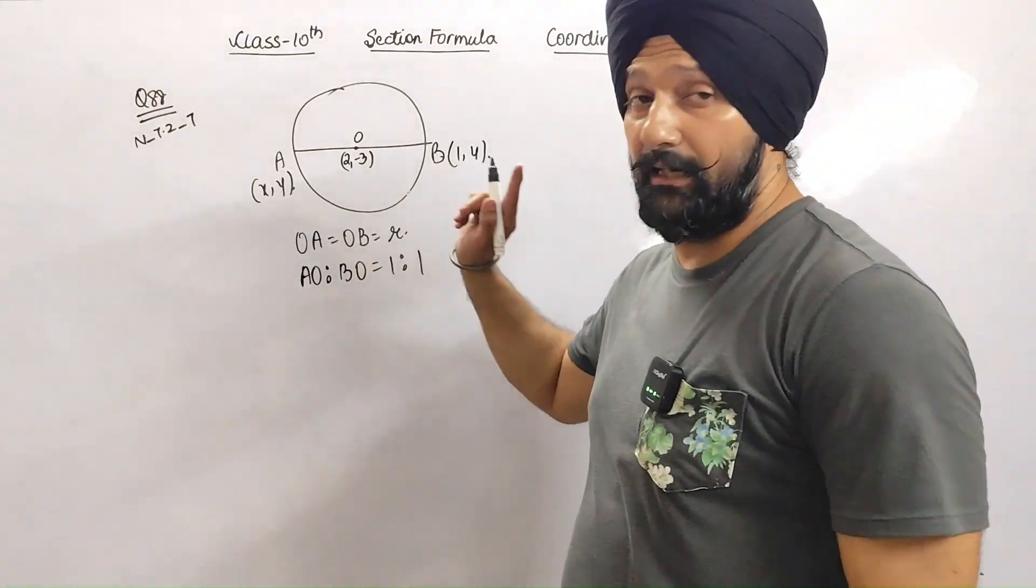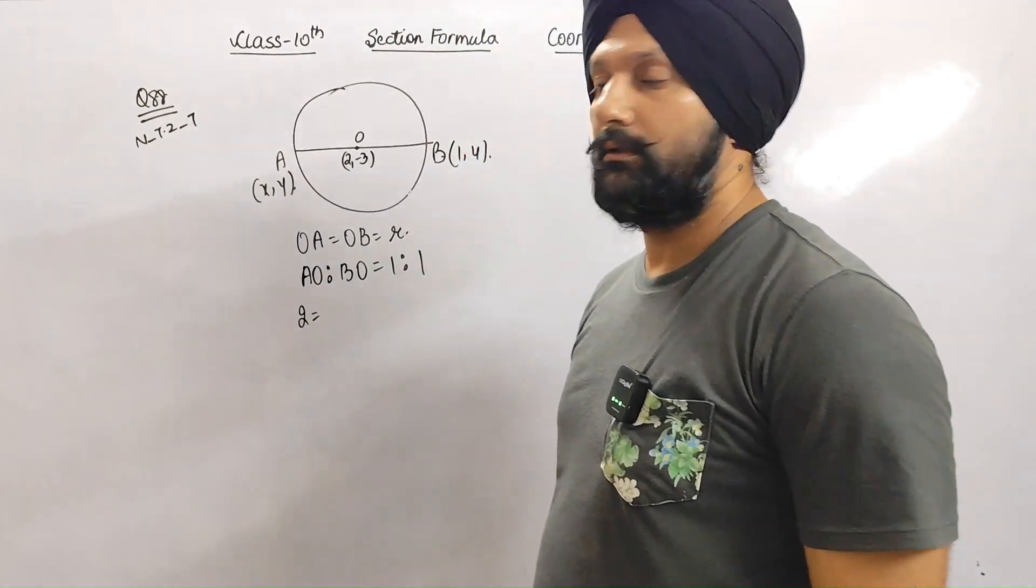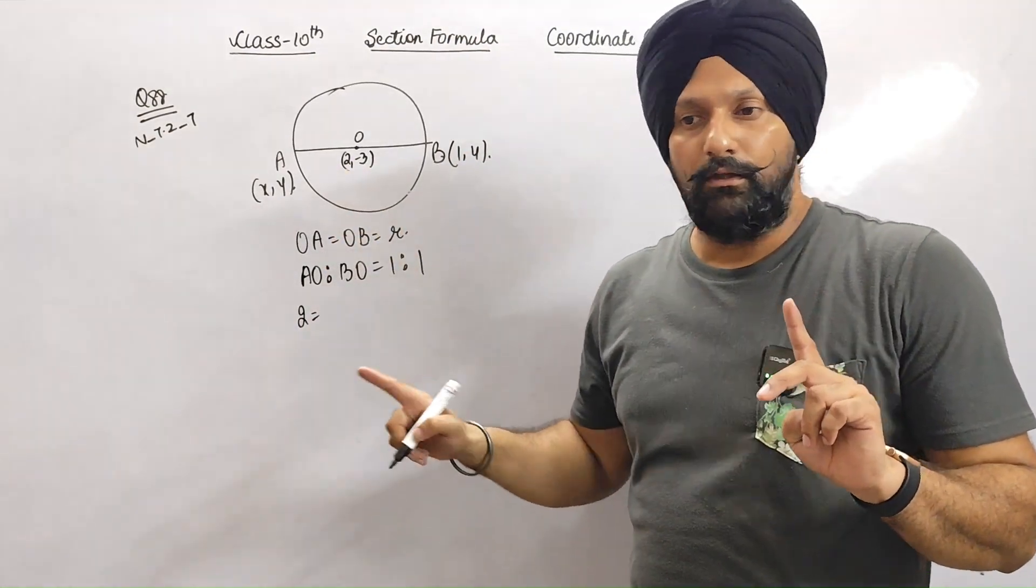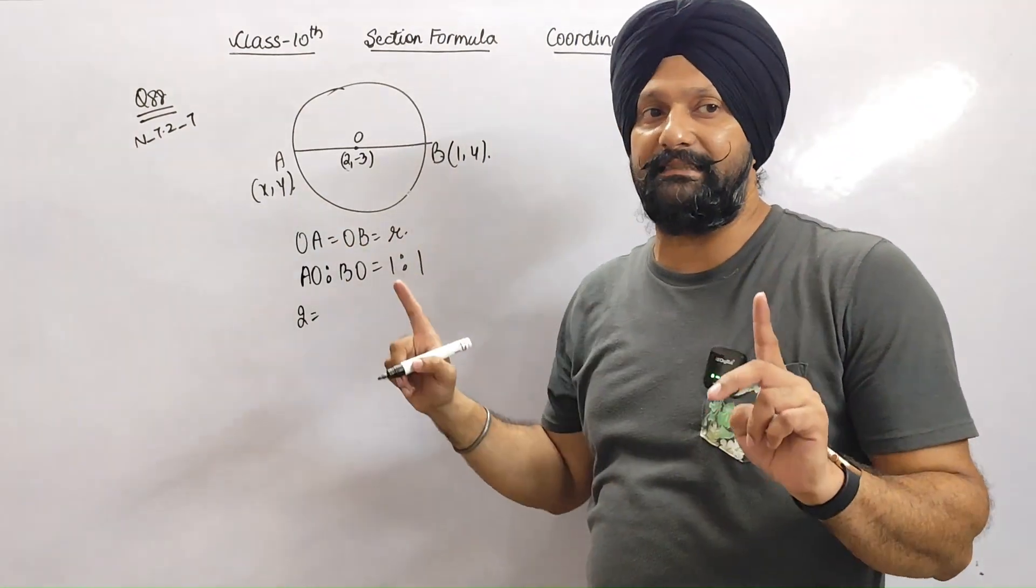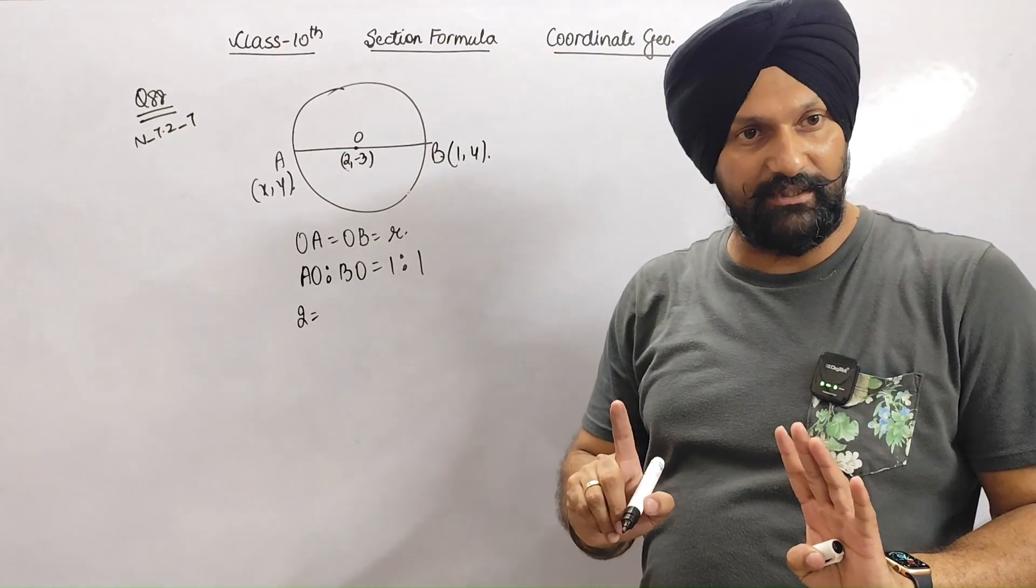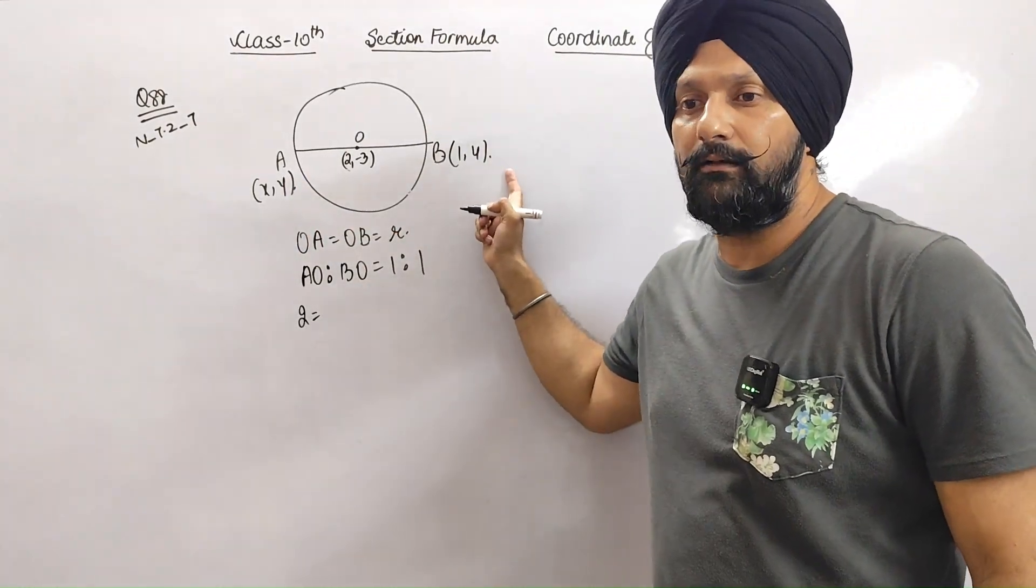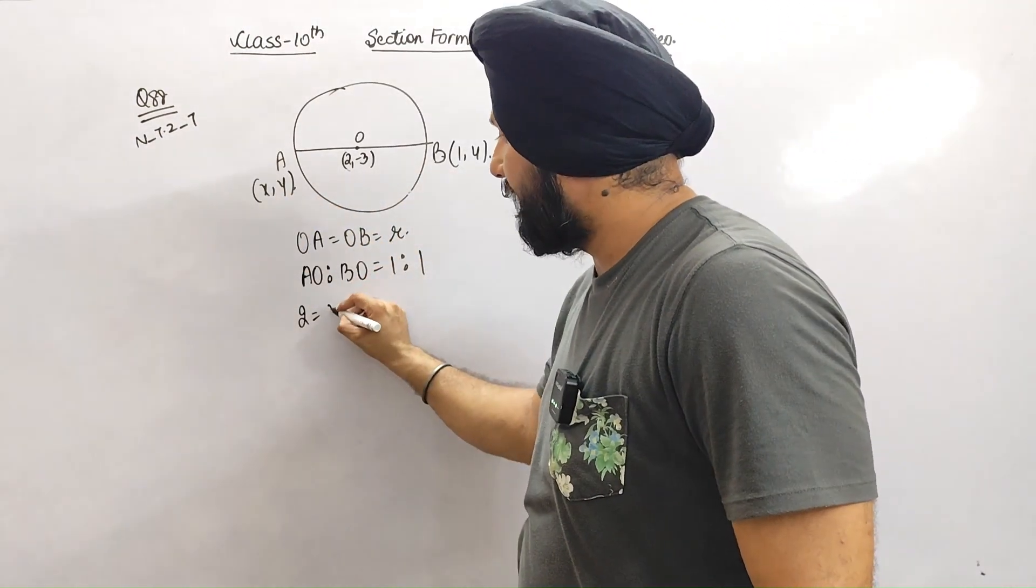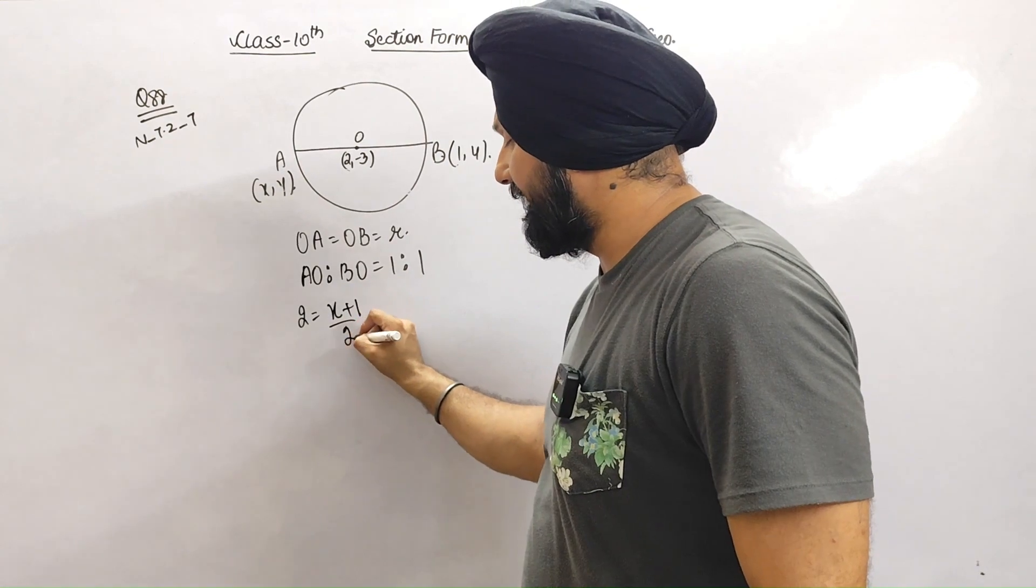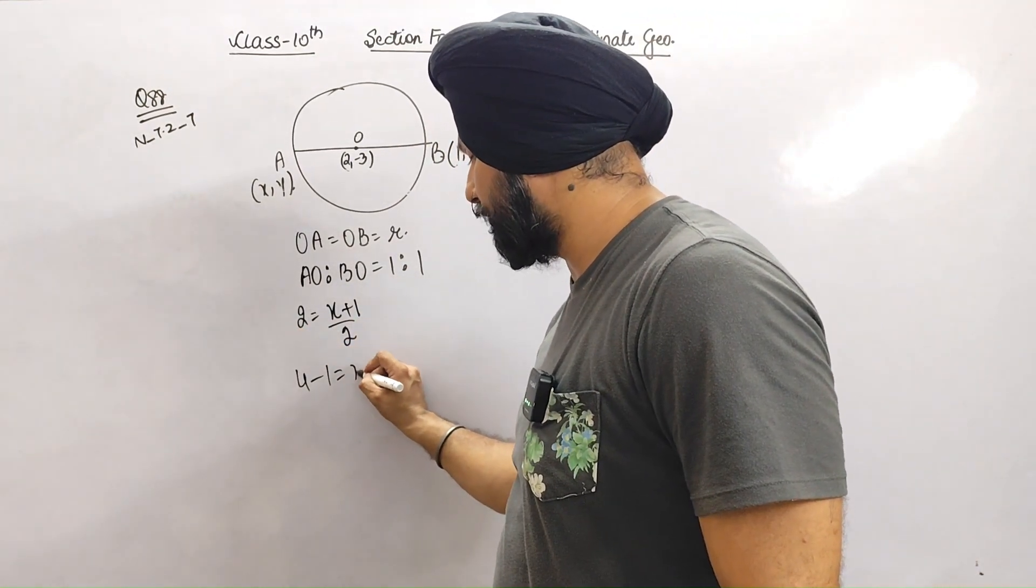This means this 2 will be equal to the sum of both x-coordinates divided by 2. Remember the logic - what did we add? x1 plus x2 divided by 2. So this results in (x + 1) divided by 2. So 2 times 2 is 4, minus 1, so x value is 3.